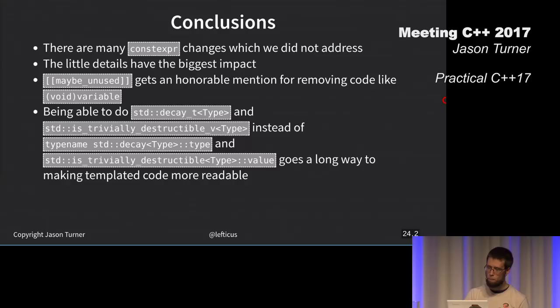These are my conclusions and I'm finishing two minutes late. I want a shout out to maybe unused here. I didn't mention it before. That helps. You've had to cast a variable to void at some point to silence the compiler. Maybe unused gets around that. There are many constexpr changes I didn't address. These things with being able to do decay, like is trivially destructible underscore V, those are really helpful.